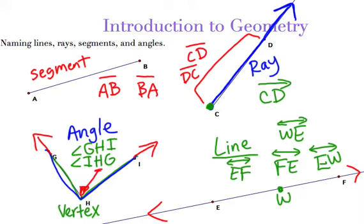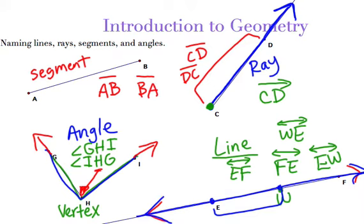Within our line, there are segments — EW is also a segment from here to here. When we mean the line, we mean the whole thing that keeps going on forever in both directions. But within a line there are little segments, and there are rays coming off from either side. If we were going to talk about the entire thing, the best description is a line, because it goes on forever in both directions.